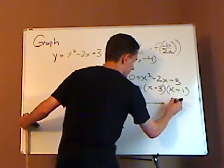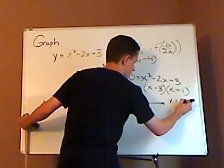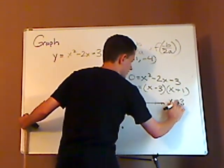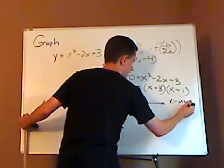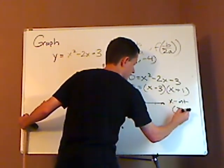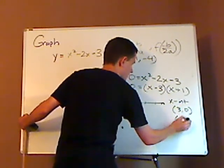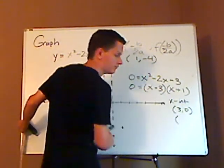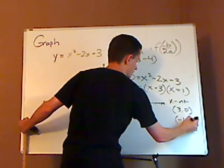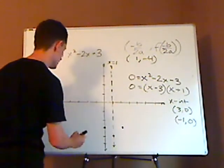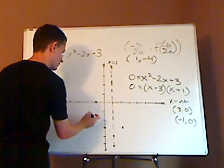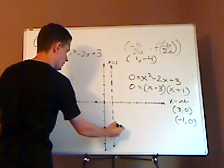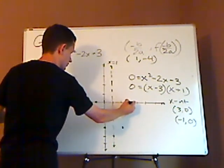So you're going to have x-intercepts, which is positive 3, comma 0. And the other one is going to be negative 1, comma 0. So I'm going to have negative 1 is right there, and positive 3 is right there.